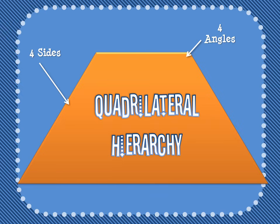Hi everybody. I'm going to talk to you about the quadrilateral hierarchy. The hierarchy of quadrilaterals is kind of like a flow chart — a chart that can help you understand that some shapes can go by other names as well because they fit the criteria for some shapes. So let's go ahead and take a look at this.